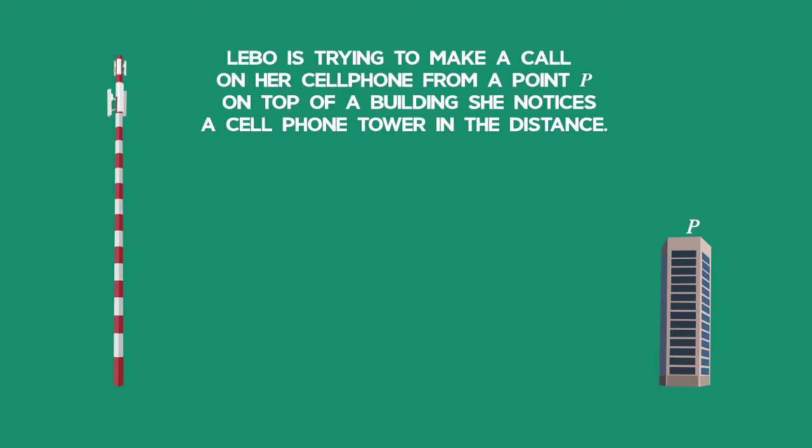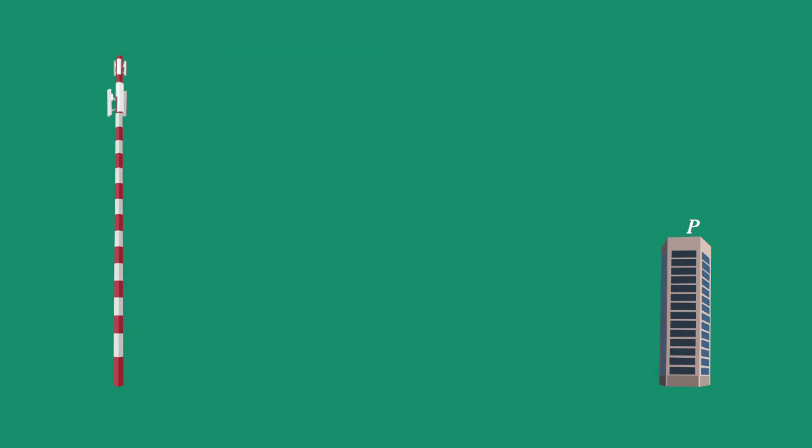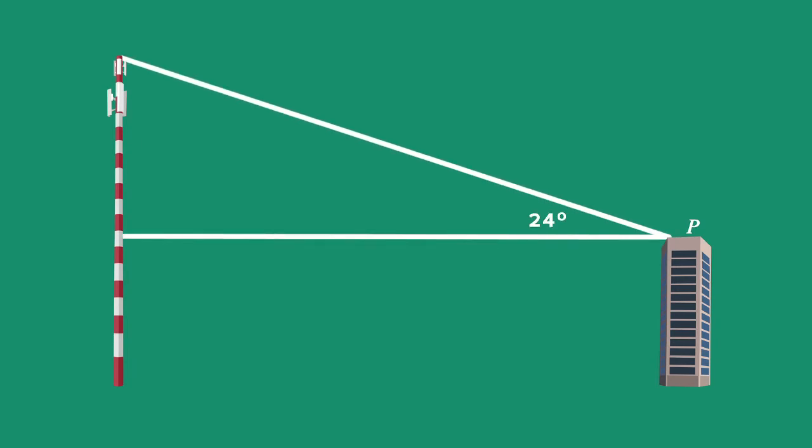A land surveyor measured the angle of elevation to the top of the cell phone tower as 24 degrees and the angle of depression to the foot of the tower is 19 degrees.